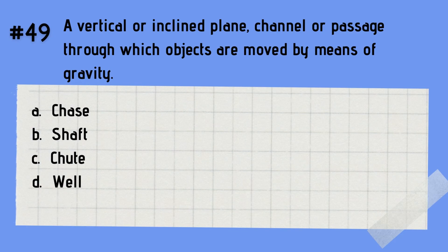Question 49: What do you call a vertical or inclined plane, channel or passage through which objects are moved by means of gravity? A. Chase. B. Shaft. C. Shoot. D. Well. The answer is C — shoot. A shoot is a vertical or inclined plane, channel or passage through which objects are moved by means of gravity.